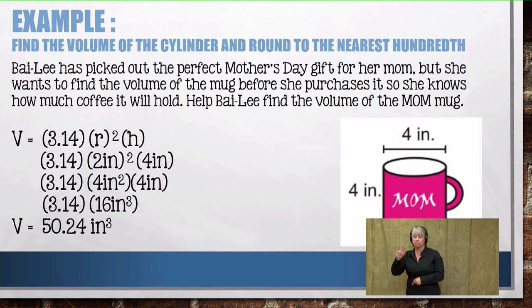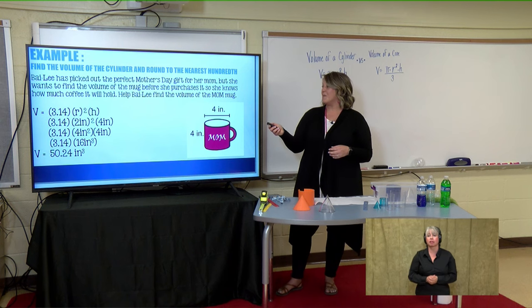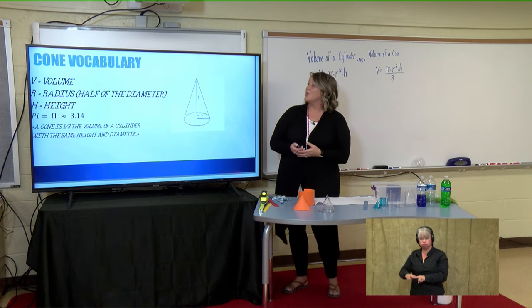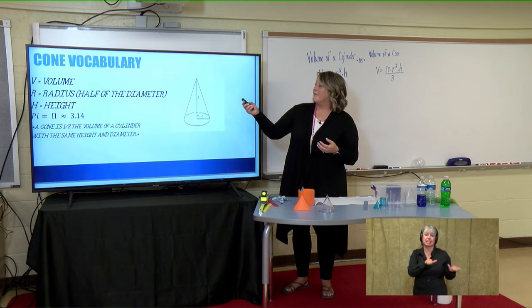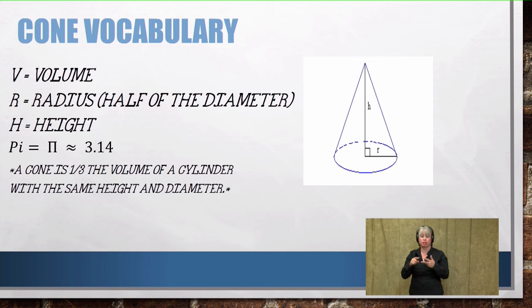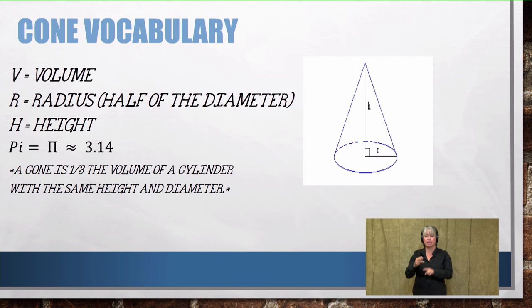That's how much volume that mug can hold — 50.24 inches cubed. Now let's look at cone vocabulary. Cone vocabulary is very similar to the cylinder vocabulary: volume denoted as V, radius which is half of the diameter, height measured from the apex all the way to the center of the circular base, and pi approximated as 3.14. A cone is one-third the volume of a cylinder with the same height and same diameter — we just proved that with our water example.